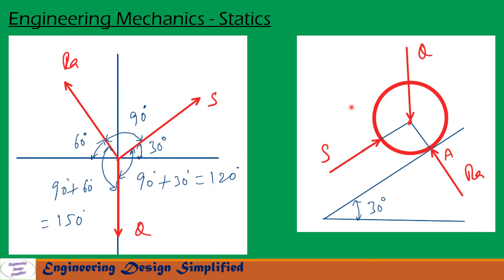For the first roller, let us draw all forces and reactions on the XY plane. Weight Q is acting downwards, and the reaction S from the second roller is acting as shown. Since this angle is 30 degrees, this angle is also 30 degrees. Reaction RA acts as shown, and since this is 30 degrees, this will be 60 degrees. So the angle between RA and S is 90 degrees, the angle between S and Q is 90 plus 30, that is 120 degrees, and the angle between RA and Q is 90 plus 60, that is 150 degrees.